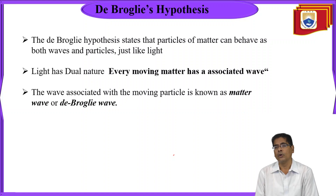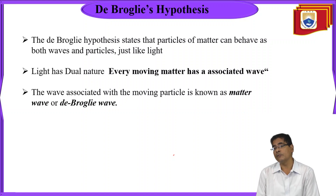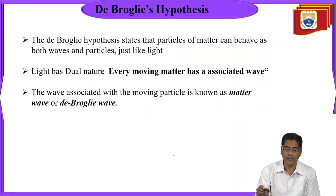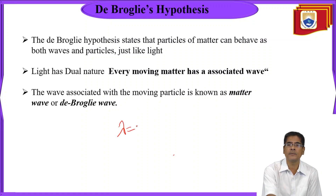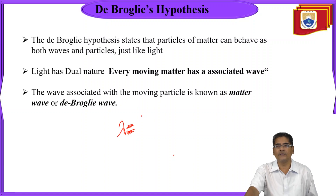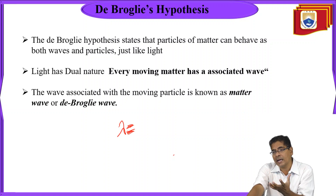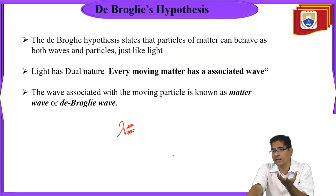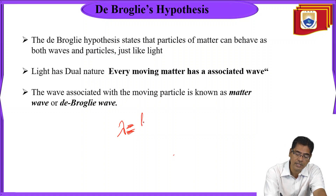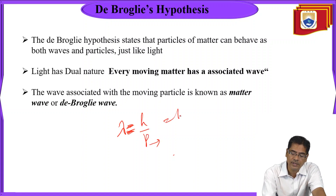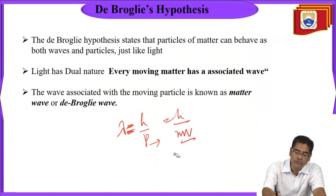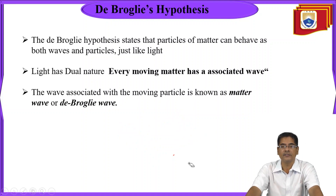Since we are talking about a matter wave or de Broglie wave, it should be associated with some sort of wavelength. The wavelength proposed for de Broglie wave is given by lambda equals h by p, where p is the momentum, which can be written as h equals m times v. This phenomenon is called the de Broglie hypothesis.